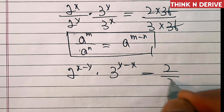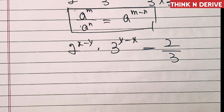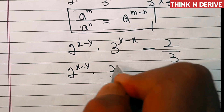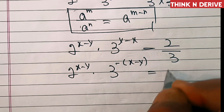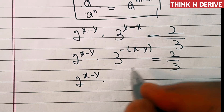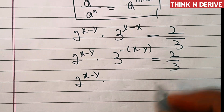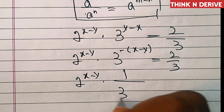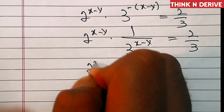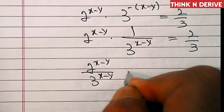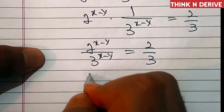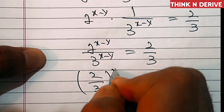This simplifies to 2 power x minus y into 3 power minus of x minus y, equal to 2 over 3. Using the rule a power minus m equals 1 over a power m, this becomes 2 power x minus y over 3 power x minus y equal to 2 over 3. Now we have different bases with the same exponent, so this is 2 over 3, all power x minus y, equal to 2 over 3.